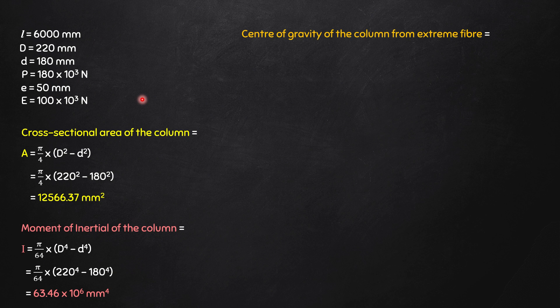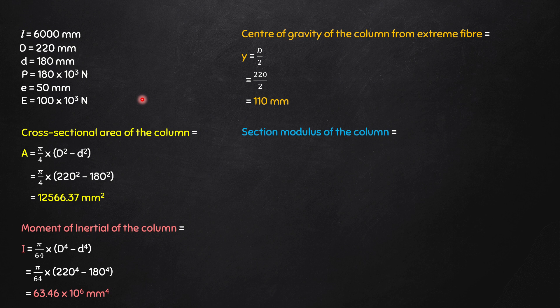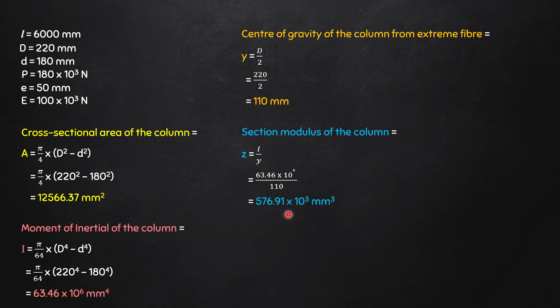Third, the center of gravity from the extreme fiber. Since this is a symmetrical section, the center of gravity is at the center of the circle, so y = D/2 = 220/2 = 110 mm. Fourth, the section modulus: Z = I/y = (63.46×10⁶) / 110 = 576.91×10³ mm³. Be careful about units — mm⁴ divided by mm gives mm³.